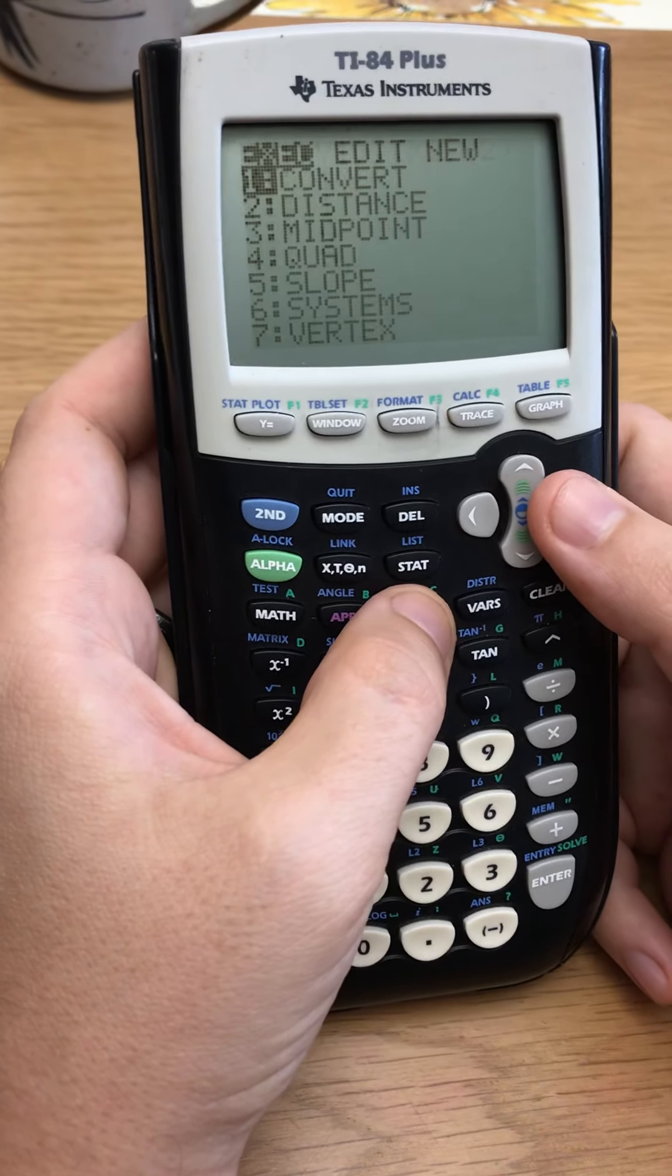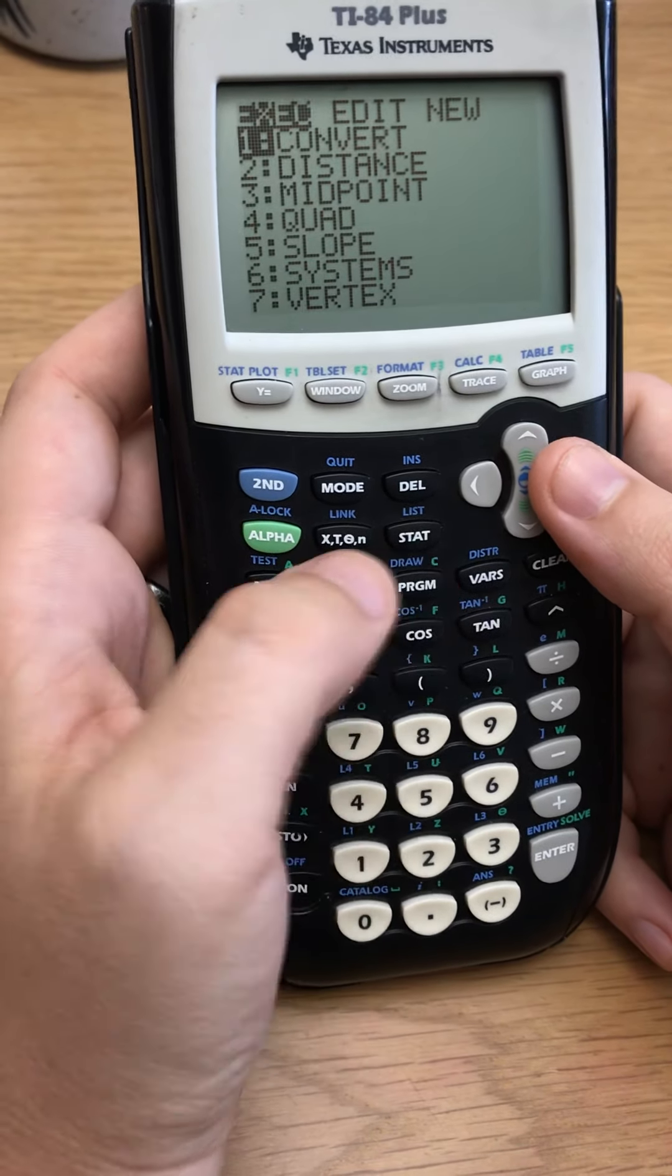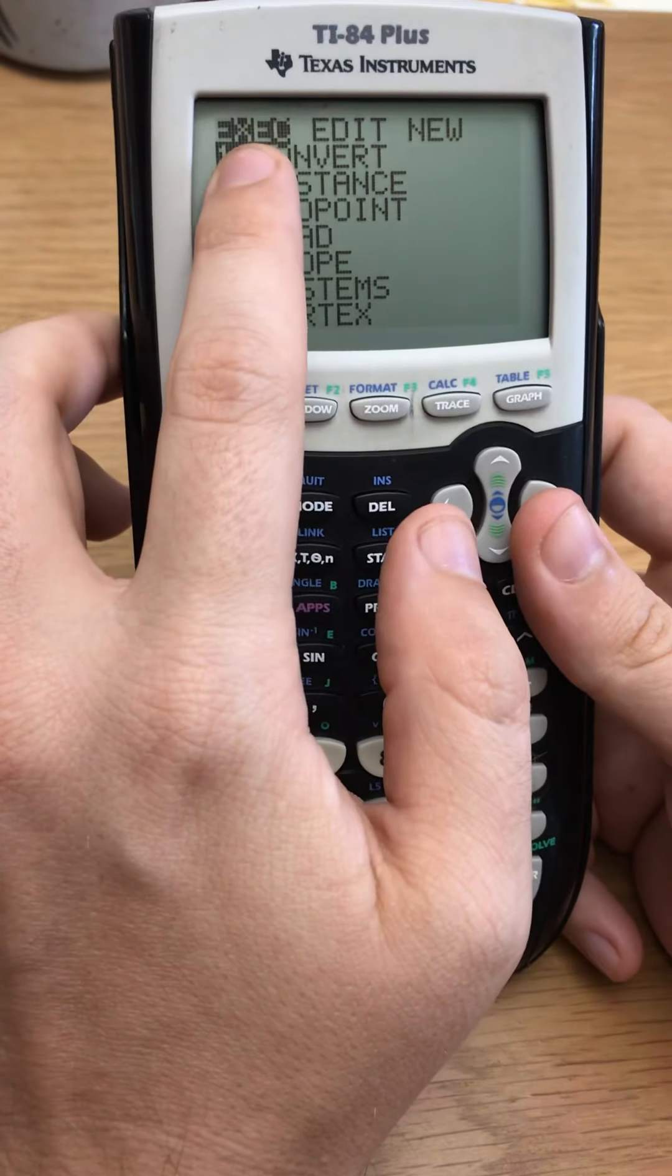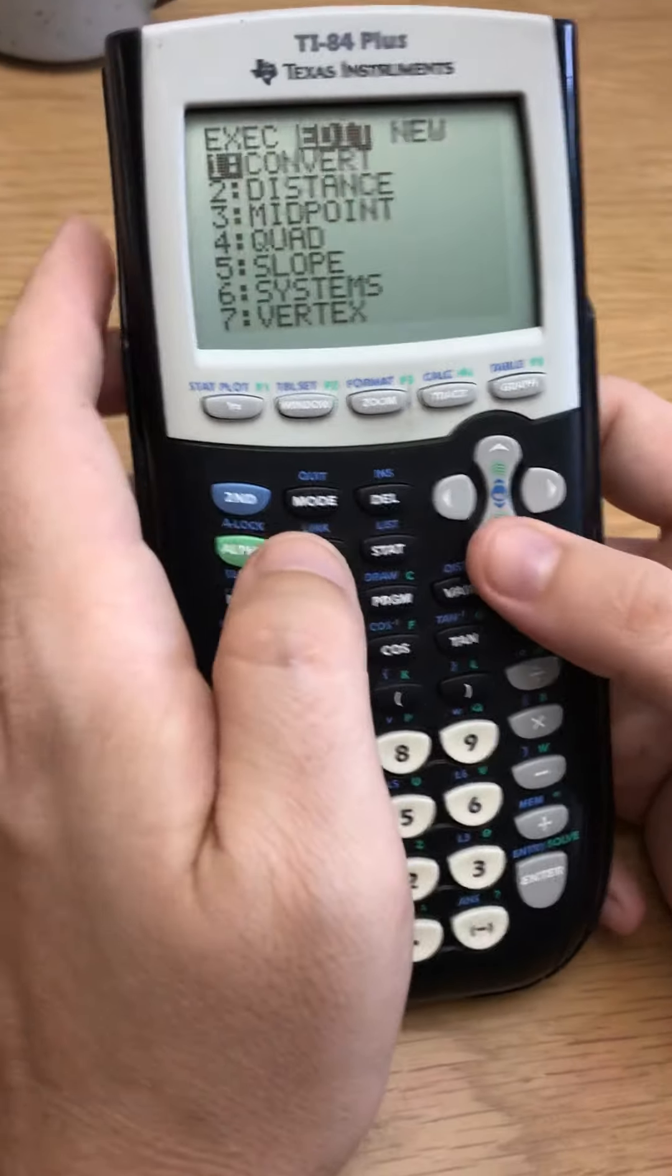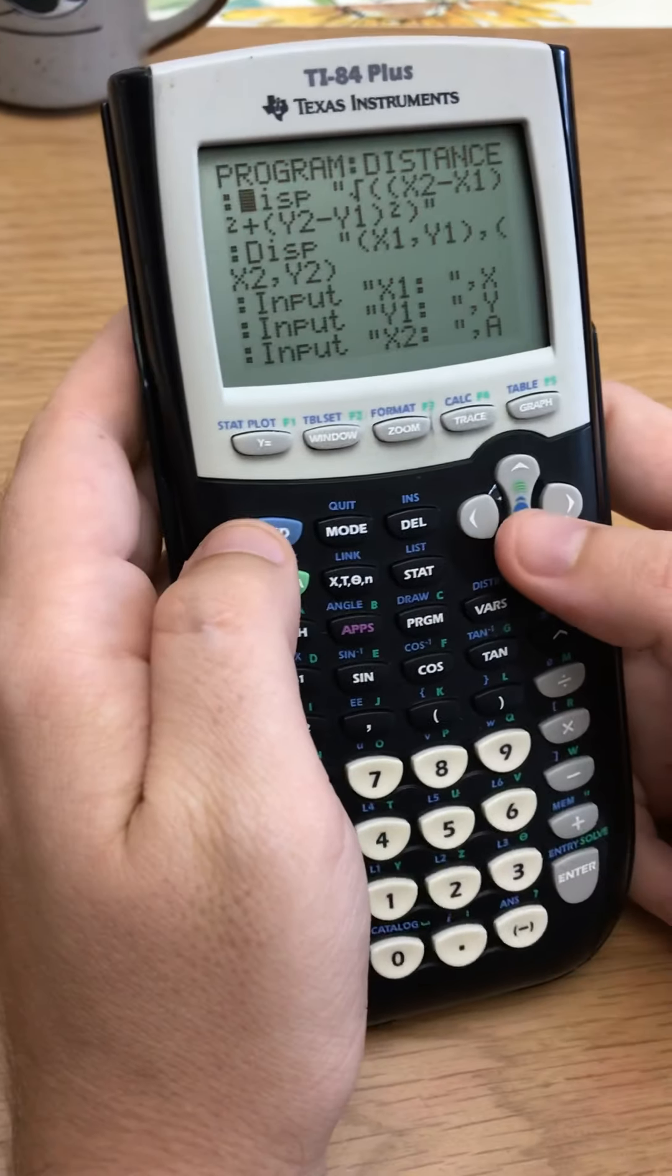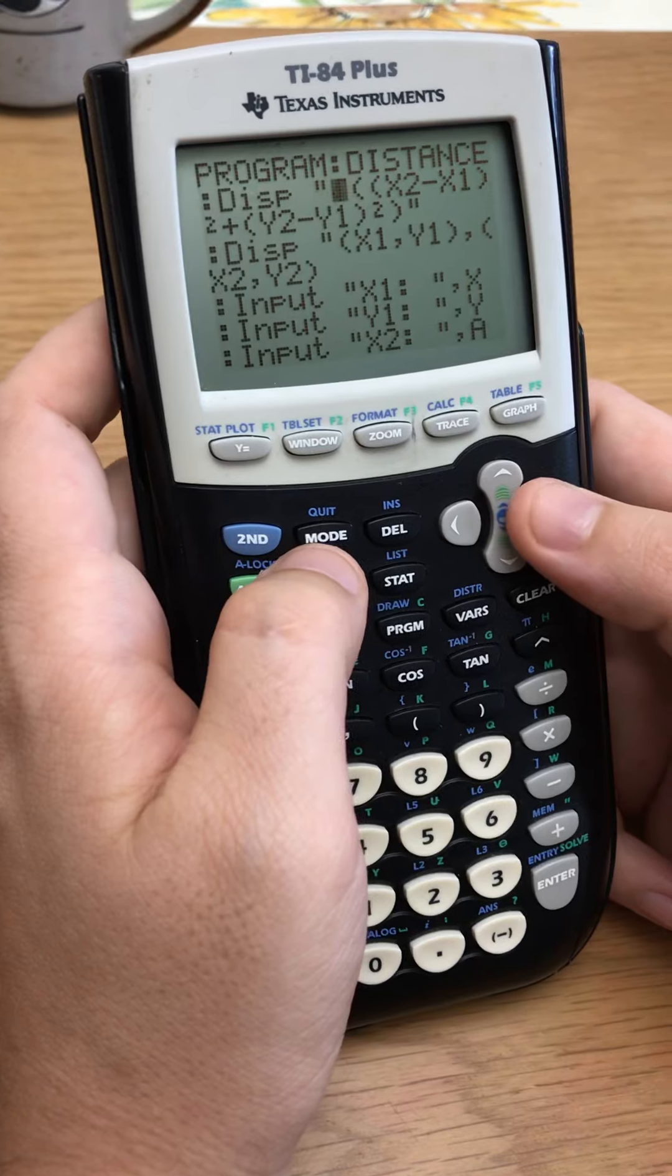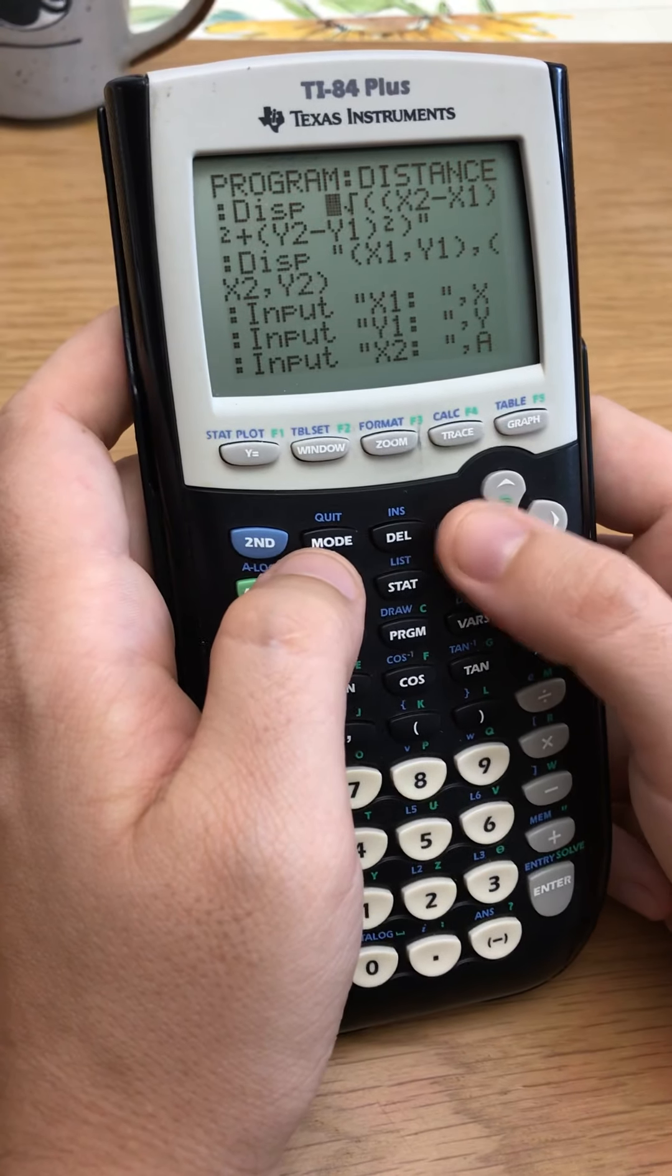So then if I want to go back and look at this program, I go to program and then here notice it says exec, that's execute, that's to do the program. Over here you can edit your program. So go to distance, you can see what it looks like here. So here's the inside scoop on my distance formula program. It's really simple.